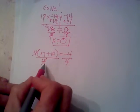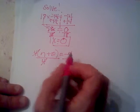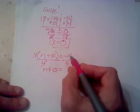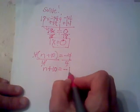So I'm just going to divide by 4 on both sides. I'm going to be left with n plus 10 equals negative 4 divided by 4, which is negative 1.